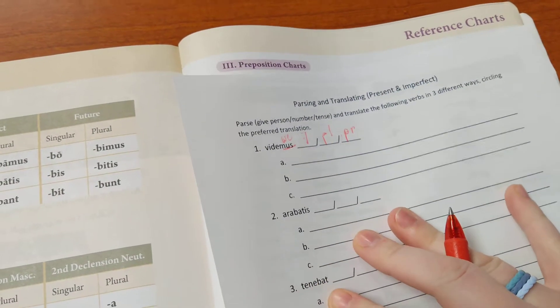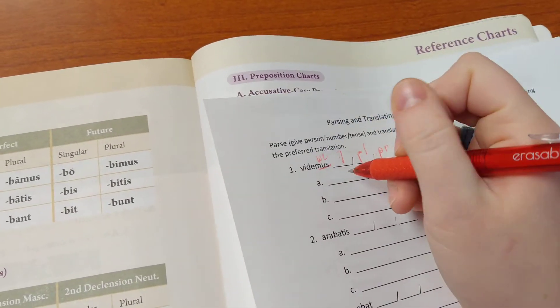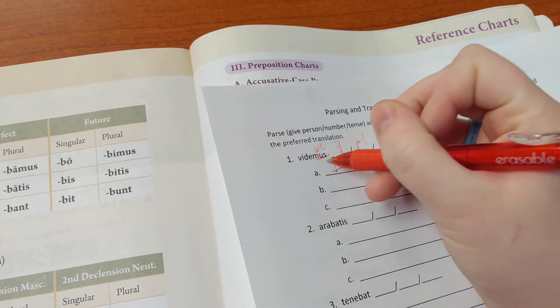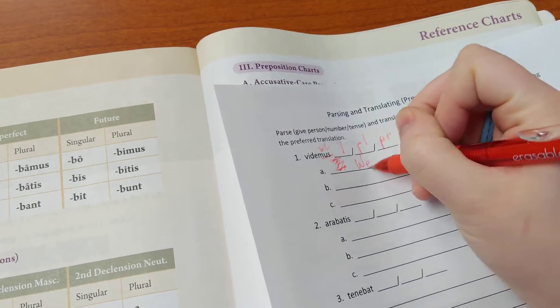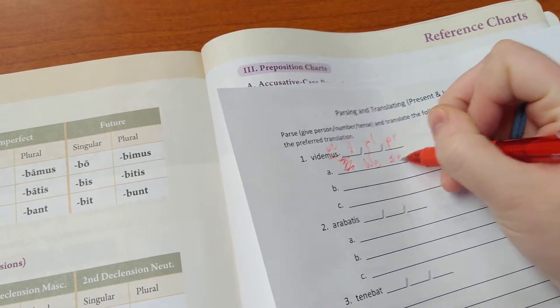The second thing we need to do is translate it in three different ways. One way would be - sorry, not I - we, because -mus means we, see.